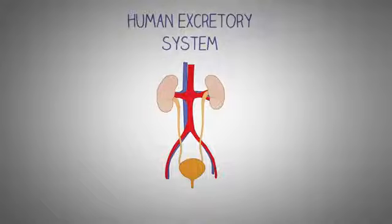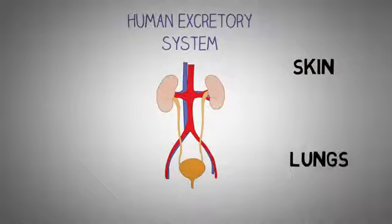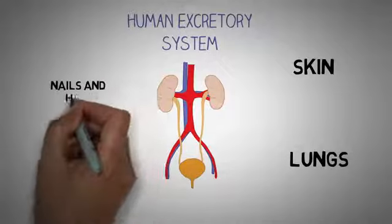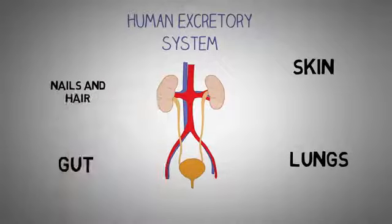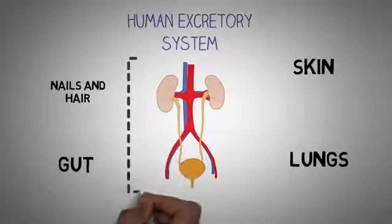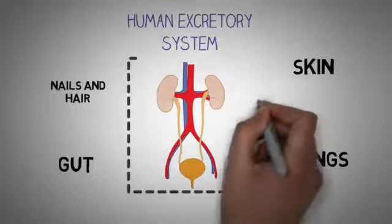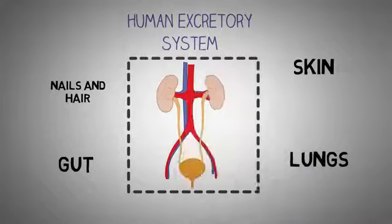In a narrow sense, the term refers to the urinary system. However, as excretion involves several other organs, it is important to remember that the human excretory system is a wide term that also includes organs like skin, lungs, gut, nails and hair. In this video, we will first learn about the urinary system and then we will discuss about the other organs that are involved in the process of excretion.